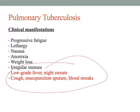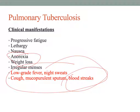TB is also distinguished by a cough with blood-streaked productive sputum and anorexia with weight loss, which typically occurs with TB. If someone presents with night sweats, a bloody productive cough, anorexia, and weight loss, we will suspect TB.